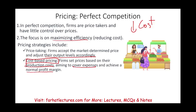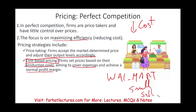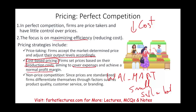How do companies in a perfect competition make a lot of money? For example, Walmart. Walmart is in a perfect competition — if you don't like Walmart you can go to Target, if you don't like Walmart or Target you can go to Amazon. They make a small profit, but they sell a lot. They try to gain market share, so their concern is to maintain and increase their market share. Since prices are standardized, firms differentiate themselves through factors such as product quality, customer service, or branding.